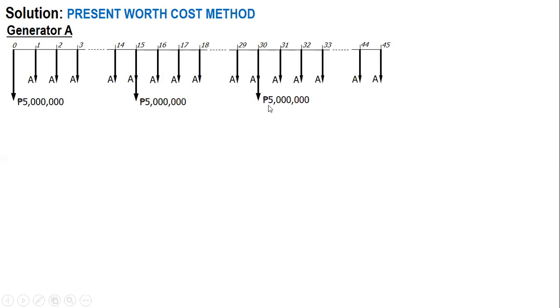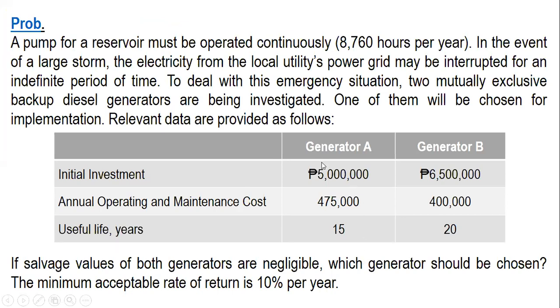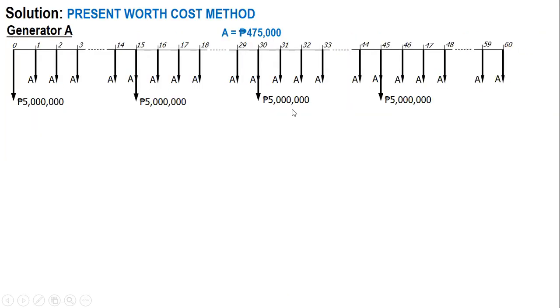For another 15 years, initial investment of 5 million and then same operating and maintenance cost. And then lastly another 15 years, 5 million, and our annual cost here is 475,000. Given in the problem, Generator A 5 million and then annual operating and maintenance cost 475,000.